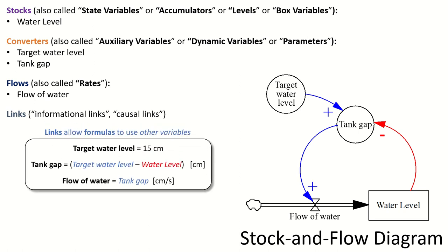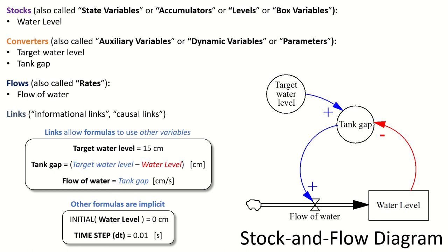We have names for all these things. The target water level is set to 15. The tank gap is a formula: target water level minus the current water level. You can already see where the causal loop diagram polarities come in — it's just this minus that. And the flow of water is just an exact copy of the tank gap, which determines the whole system.